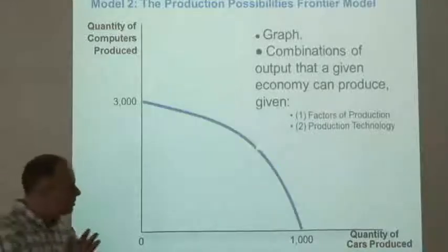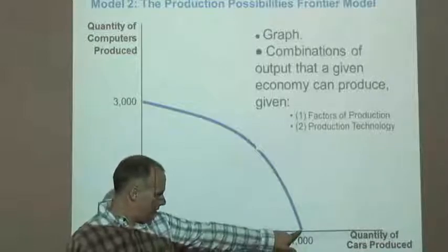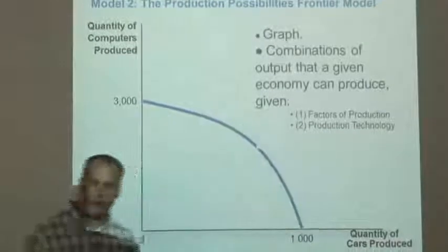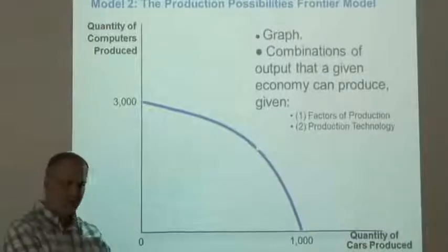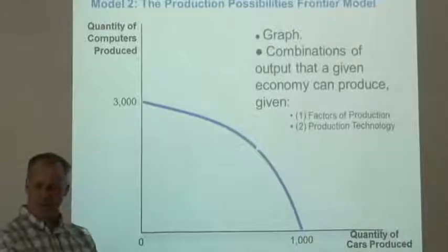So consider this graph here, this graph that we've drawn. What it tells us, what this line here represents, is a sort of boundary. This is the frontier. The production possibilities frontier is the boundary of goods and services that can be produced in this economy.